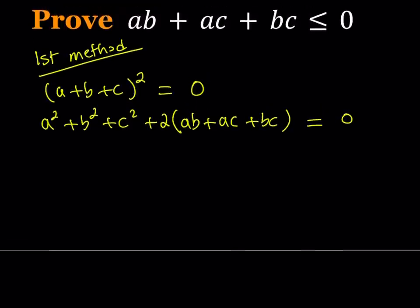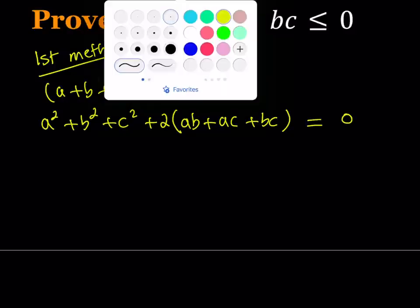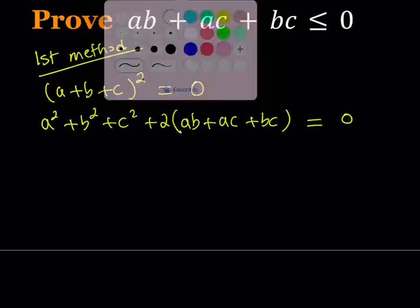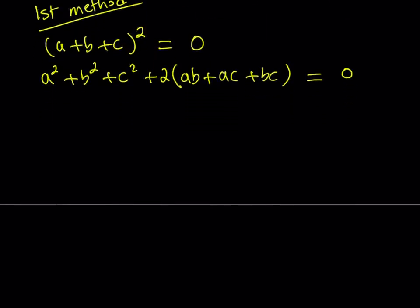Now this is nice because we're trying to prove that ab plus ac plus bc is less than or equal to zero, and we got that in our expression. Even though it's twice, that's perfectly fine. So we're going to proceed by using another inequality that's well known, but in order to show you how that works, I'm going to quickly prove that inequality.